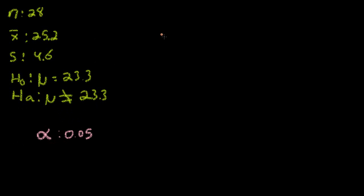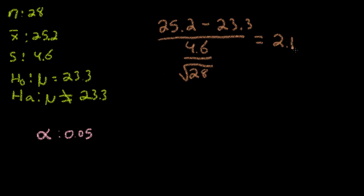In order to answer this question, we're going to first calculate our t-value. To do this, we will be using the sample mean, 25.2, subtract the supposed null hypothesis of 23.3, divided by the sample's standard deviation of 4.6, which is then divided by the square root of our sample size, 28. This equals 2.186, which is going to be our t-value.